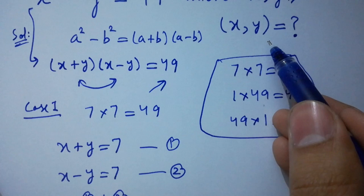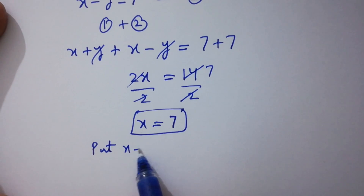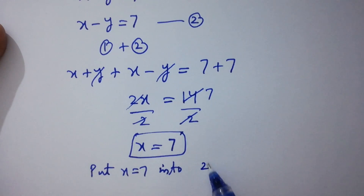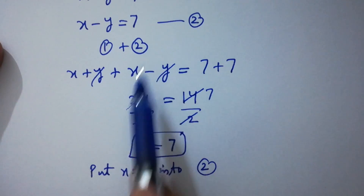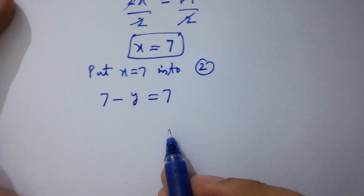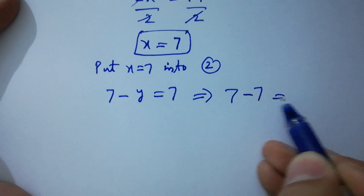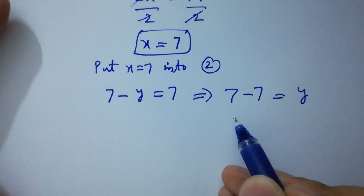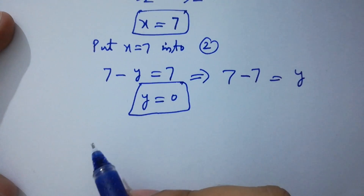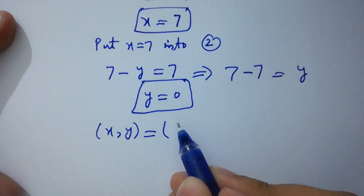Now we want the value of y. Substituting x equal to 7 into the second equation, x minus y equal to 7 becomes 7 minus y equal to 7. Rearranging, 7 minus 7 equals 0, so y equal to 0. Our first solution is x equal to 7 and y equal to 0.